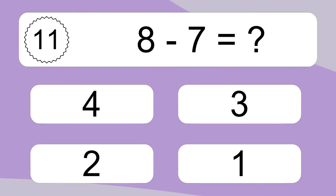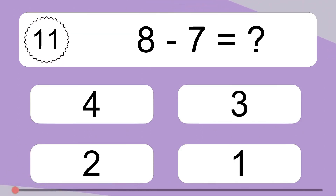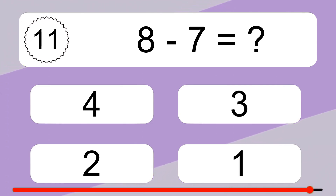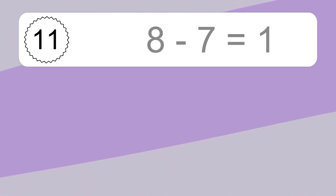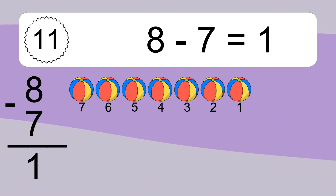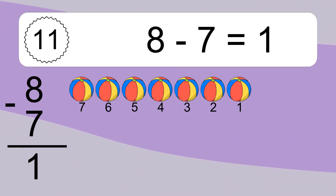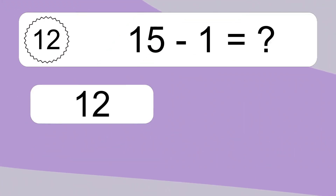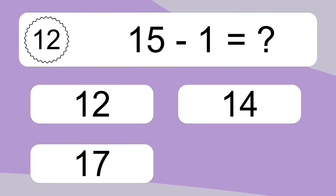8 minus 7 equals what? 8 minus 7 equals 1. Let's count it: 7, 6, 5, 4, 3, 2, 1.